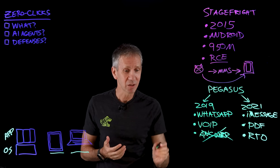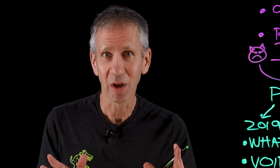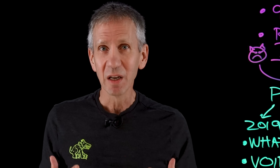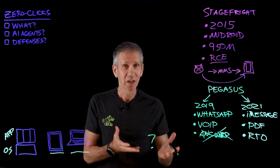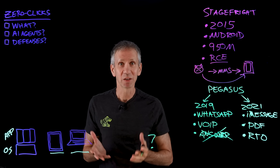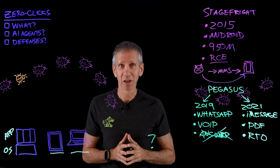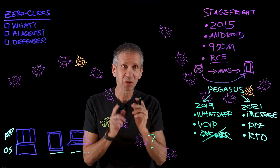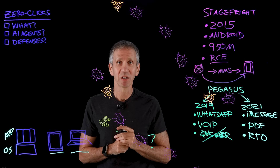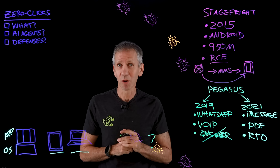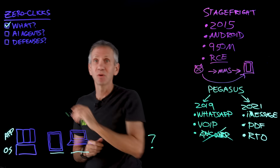So how is this possible if you didn't do anything? In theory, if all software were perfect, this wouldn't happen. But the reality is that software has bugs. All software of any real consequence and size has some bugs built into it, and some percentage of those bugs are security-related — and those are the ones that get exploited in zero-click attacks.